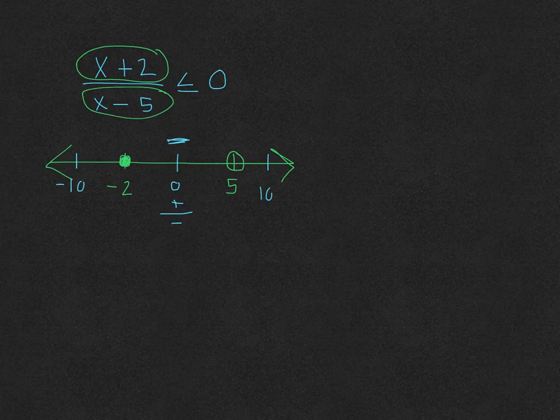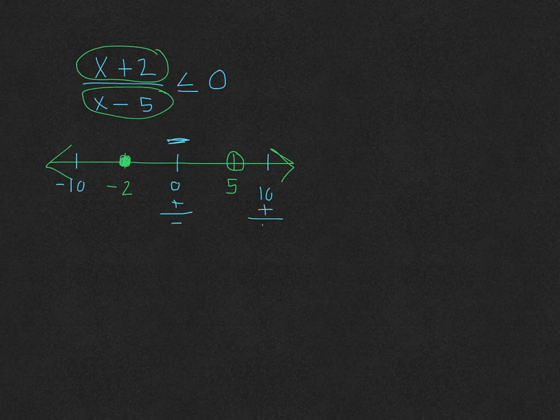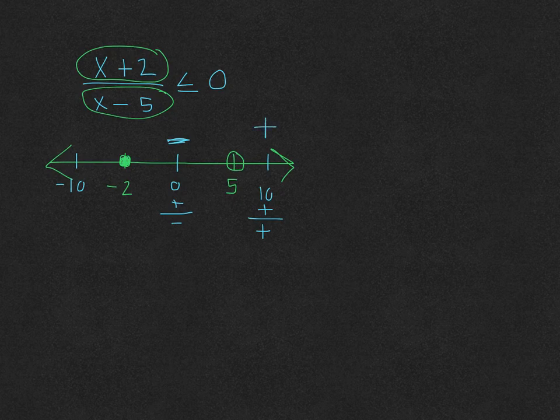Let's try 10. 10 plus 2 is positive 12. 10 minus 5 is positive 5. A positive over a positive is positive.